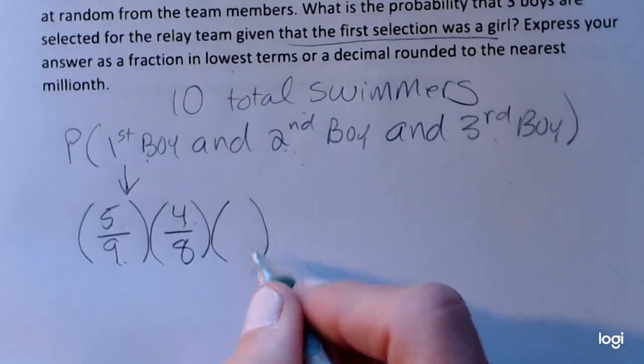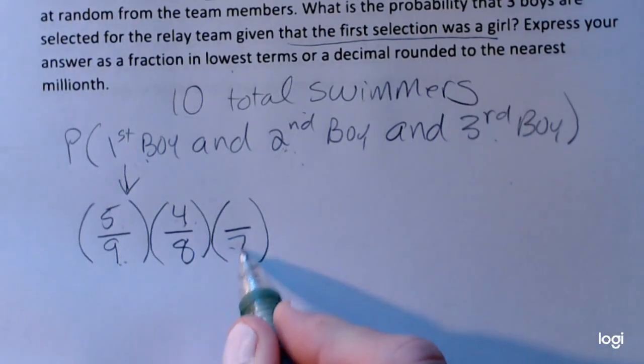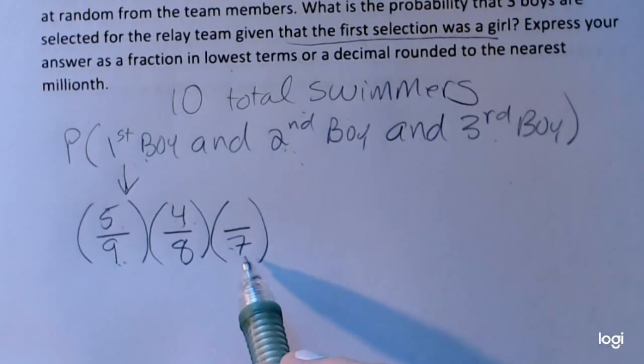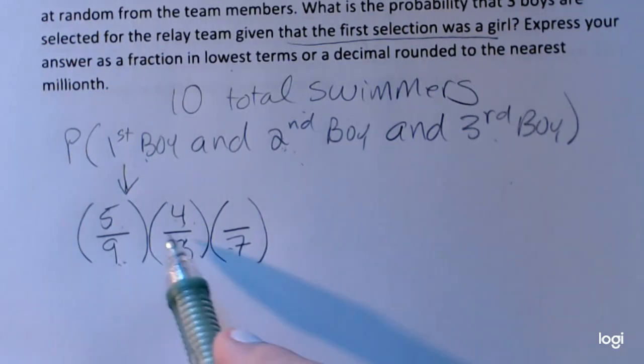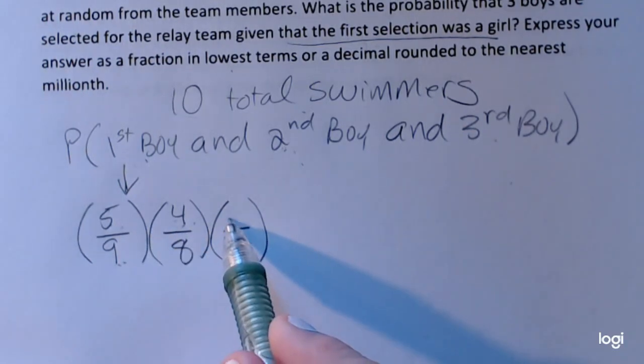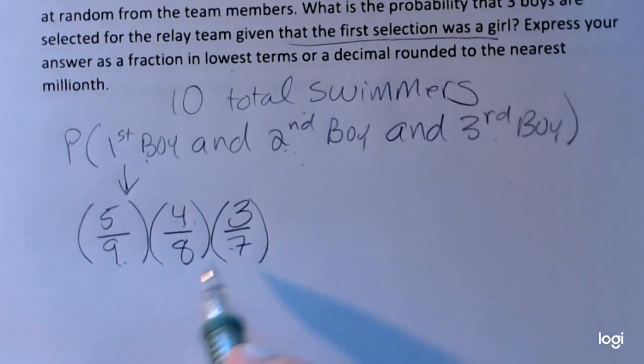So using the same reasoning, again, my sample space will be reduced by one because I've selected three swimmers already. And looking at these numerators, I also need to reduce this numerator by one because two boys have already been selected.